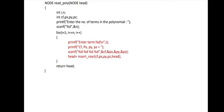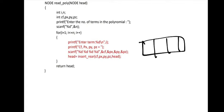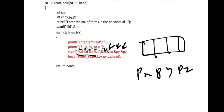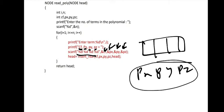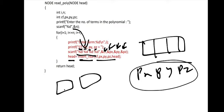Read polynomial is about taking in values from the user — not displaying. We print a prompt for cf, px, py, pz and scan the user's input, storing those values. Then head equals insert rear, so each term is inserted into the list. Second iteration inserts a new node, third iteration inserts another, and so on. That's how read polynomial works for taking in the values.